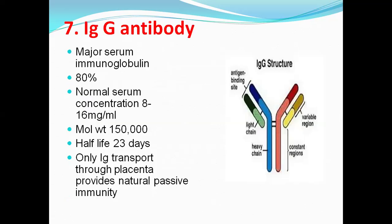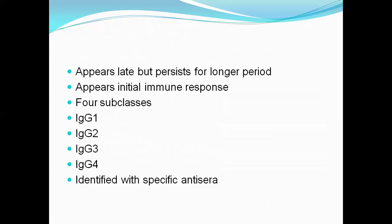Next question: IgG antibody. IgG antibody is the major serum immunoglobulin, present at almost 80% of total serum. The normal serum concentration is 8 to 16 mg per ml. IgG has a molecular weight of 150,000 daltons and a half-life of 23 days. It is the only immunoglobulin that can cross the placenta, giving natural passive immunity. There are 4 subclasses: IgG1, IgG2, IgG3, and IgG4. This antibody appears late in response to infection but persists for a longer period. These subclasses are identified with specific antiserum.